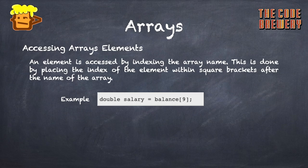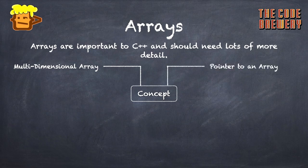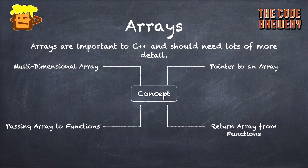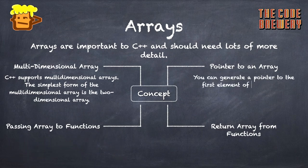The two most important things in C++ are arrays and classes. Arrays are very important to C++ and need a lot more detailed study. There are several different types of array concepts: multi-dimensional arrays, pointer to an array, passing an array to functions, and returning an array from functions. Since this is a basics tutorial, we will learn briefly about all of them. The simplest form of multi-dimensional arrays is the 2D array, where you simply write two sets of brackets and specify the index size of each.